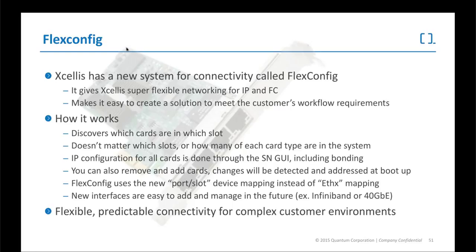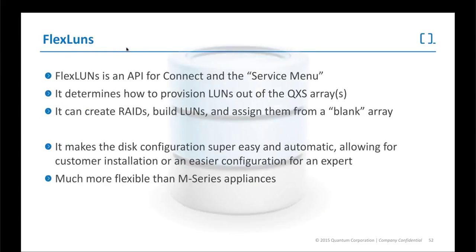FlexConfig is the new system for connecting — it allows us to start connecting users in whole new ways. We can add 10-gigabit and Ethernet cards to allow connection methods that weren't there before — not over fiber without dedicated servers in between. FlexConfig will automatically discover what cards are in the metadata controllers and immediately make those available. You can configure those cards through the Connect interface, making the whole system easier to use with RAID management and automatic configuration, allowing users to manage it without calling an engineer every time.